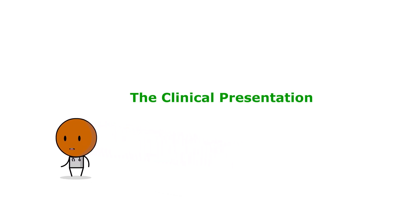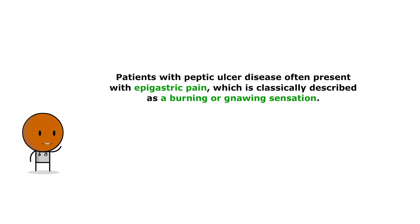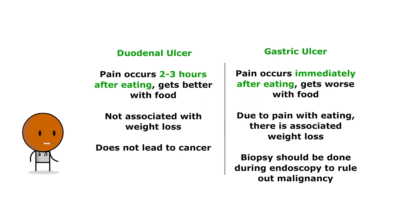But how do patients present with peptic ulcer disease? Patients often present with epigastric pain, which is classically described as a burning or gnawing sensation. The pain may be relieved by food or antacids in duodenal ulcers, or worsened in gastric ulcers. Other symptoms include bloating, early satiety, and less commonly, nausea and vomiting.